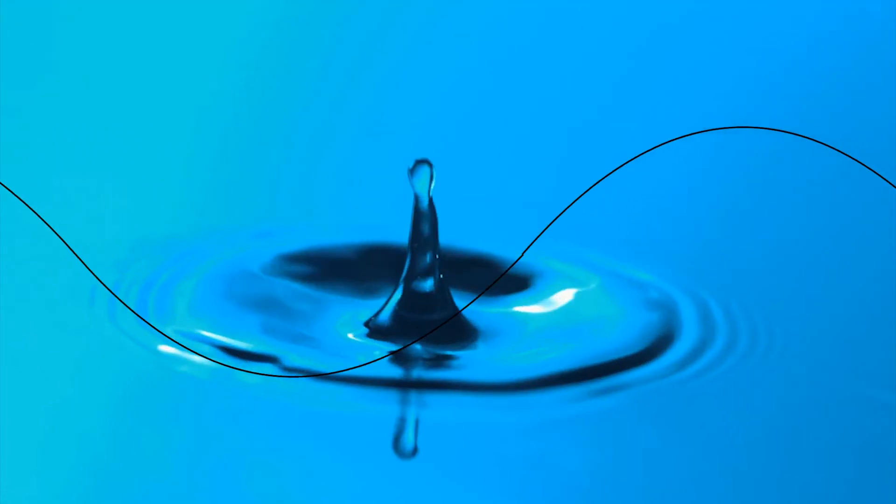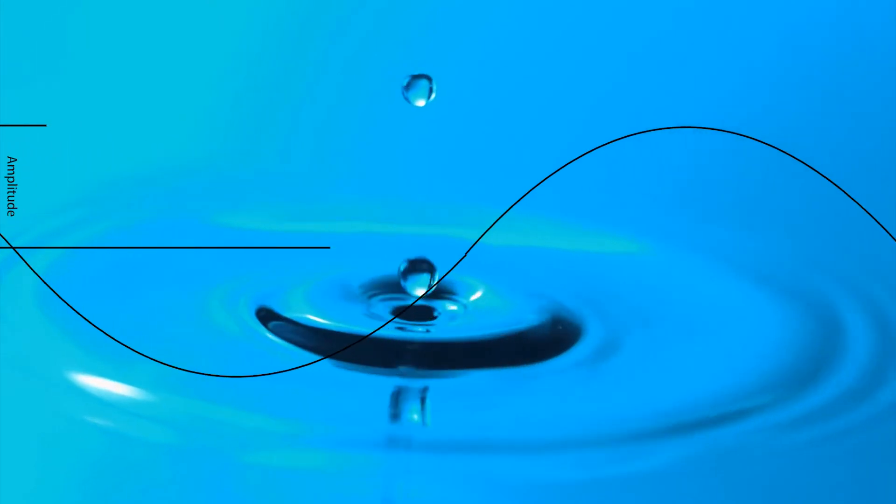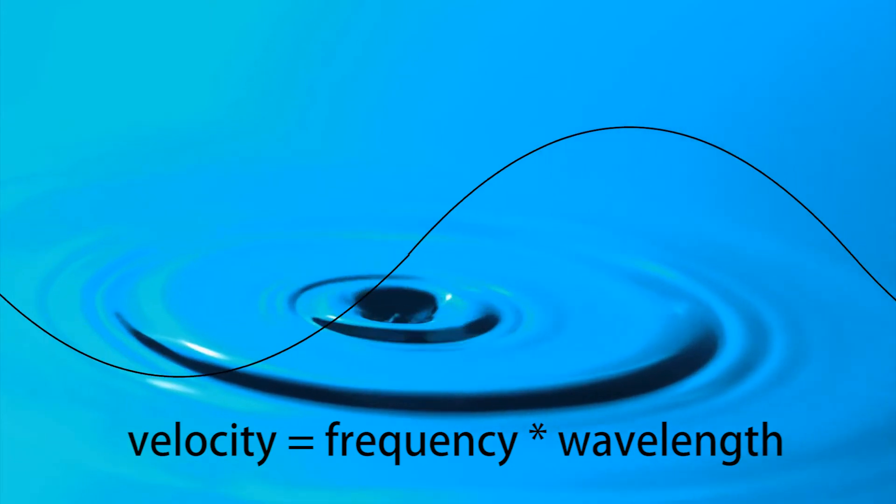There are a few basics. The size of the wave is called the amplitude and is measured here. And the velocity is given by velocity equals frequency times wavelength.